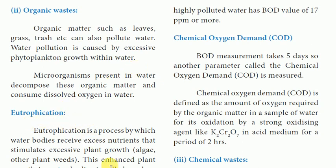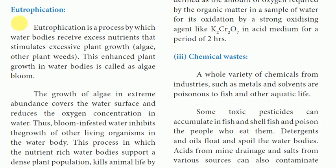Next is eutrophication. Eutrophication is the process by which water bodies receive excess nutrients that stimulate excessive plant growth, such as algae and other plant weeds. This enhanced plant growth in water bodies is called an algae bloom.